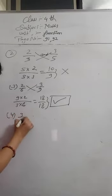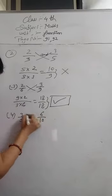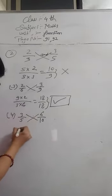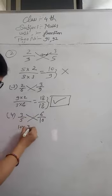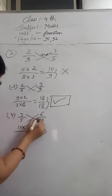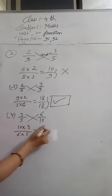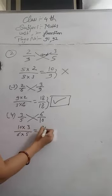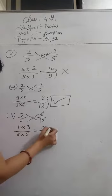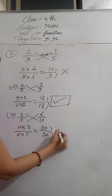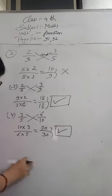Fourth one is 3 by 5 and 6 by 10. So 10 multiplied by 3 and 6 multiplied by 5. 10 threes are 30 and 6 fives are 30. So these are equal, so we will put a tick sign here.